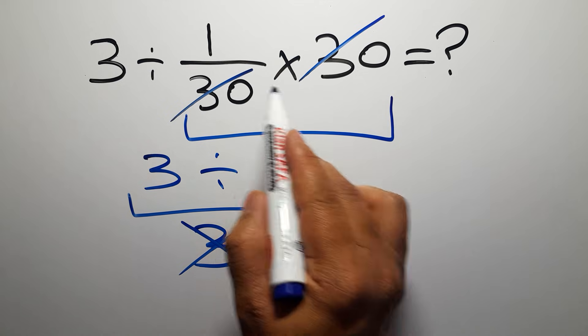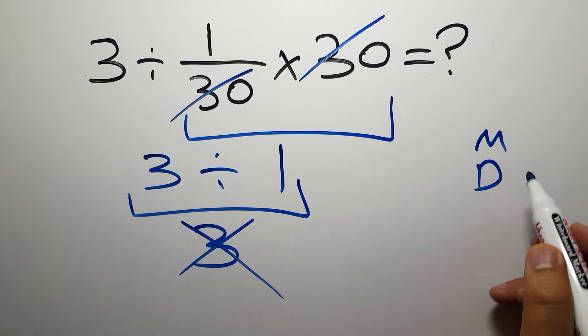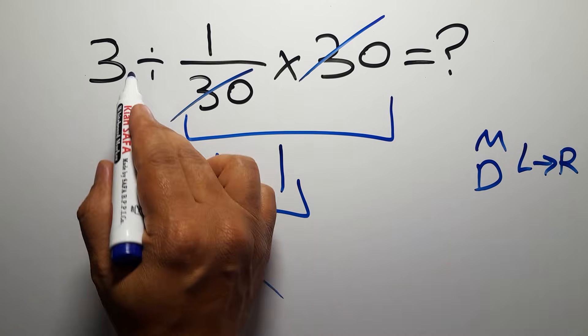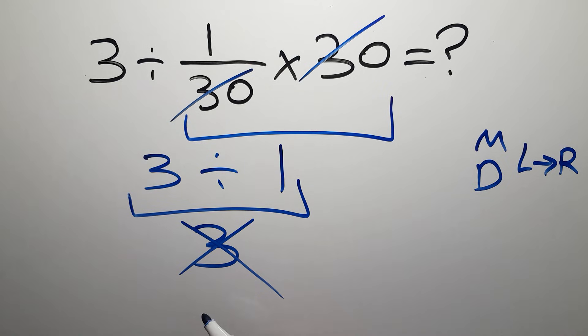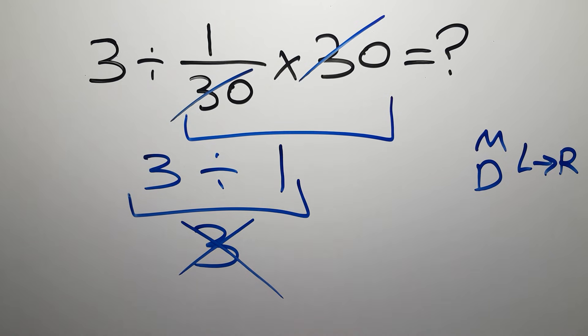Because according to the order of operations, multiplication and division have equal priority, and we have to work from left to right. So here, first we have to do this division, and then this multiplication.